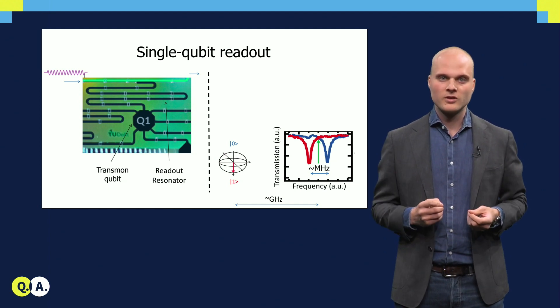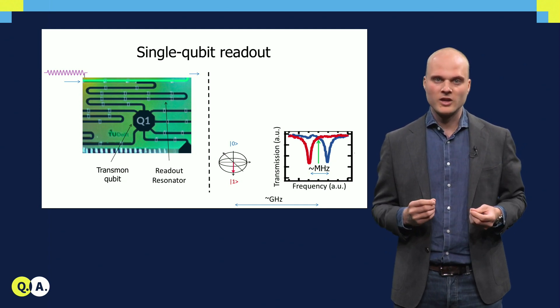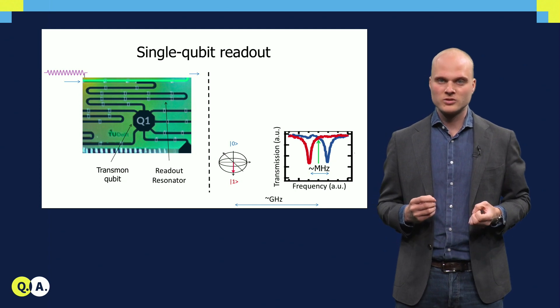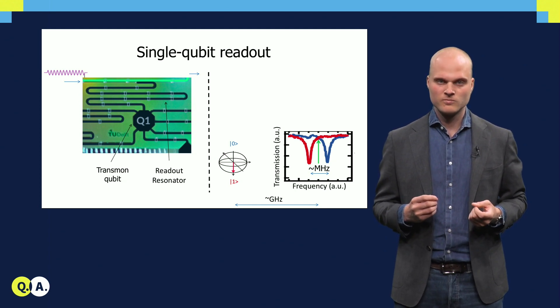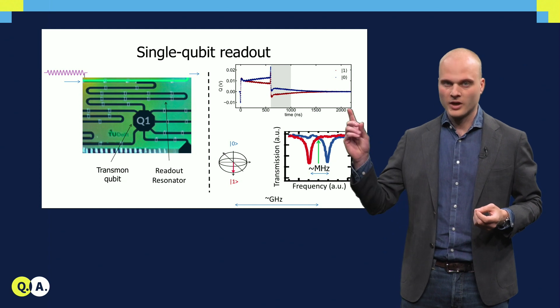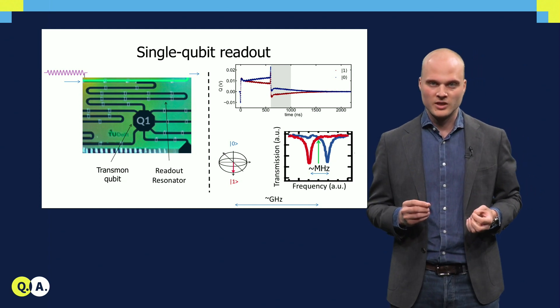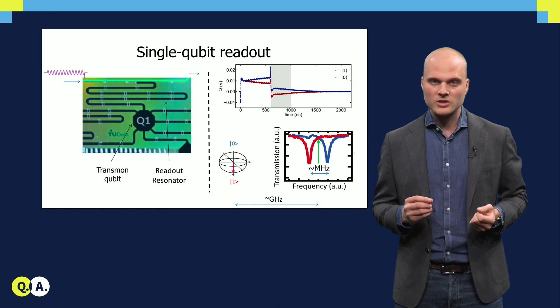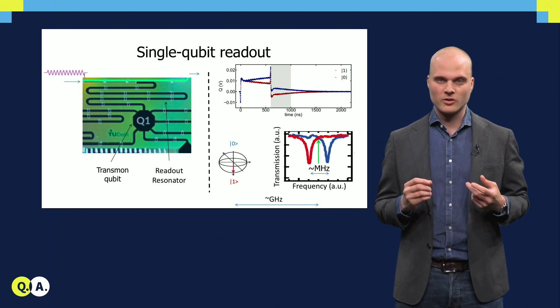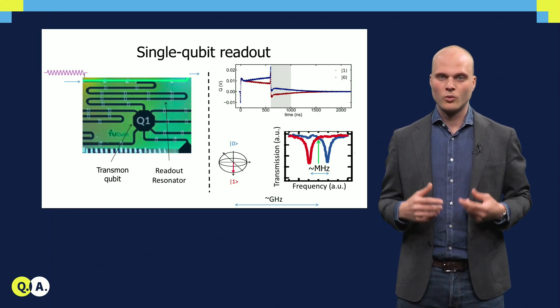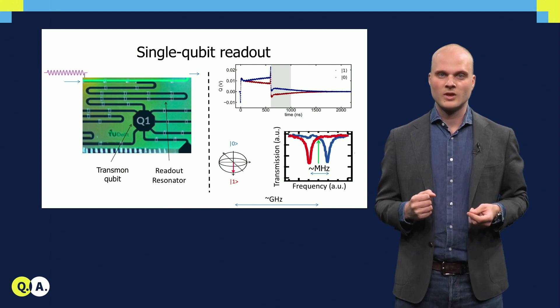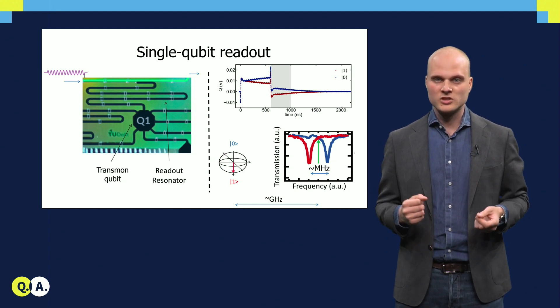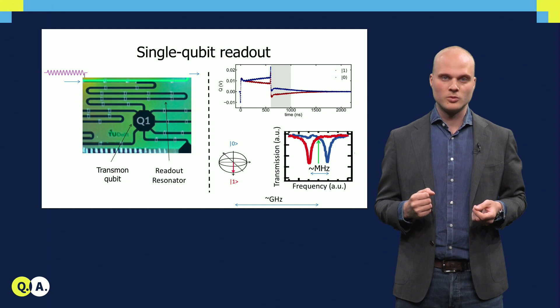We can observe this shift, and thereby the qubit state, by injecting the resonator with a pulse near the resonator frequency. The pulse, as shown here, is reflected by the resonator. Here, we show the output voltage as a function of time for the qubit in the ground state and the excited state, which clearly look different. Hence, we are able to distinguish and measure the two different qubit states.